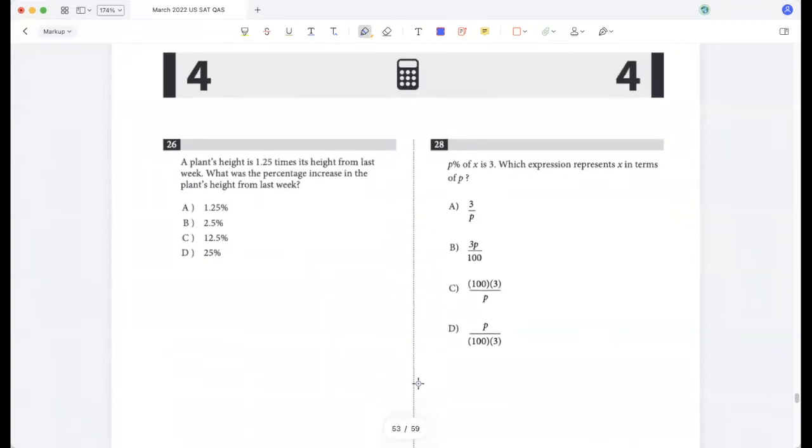A plant's height is 1.25 times its height from last week. What was the percentage increase? That will be 25 percent, because x plus 25 percent of x is 1.25x.